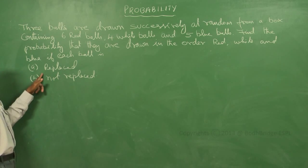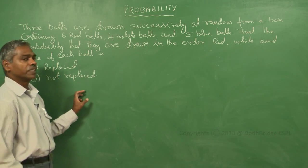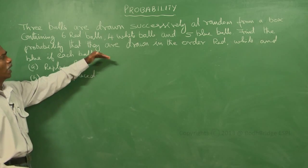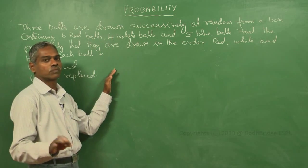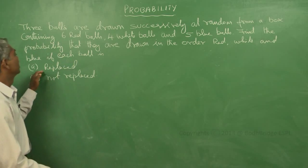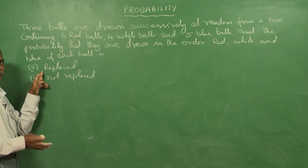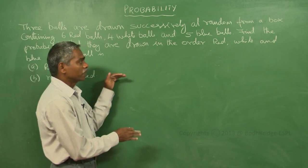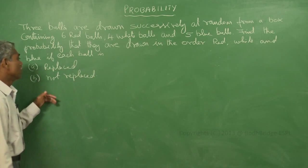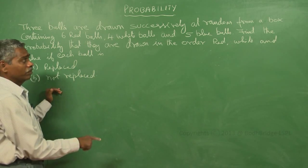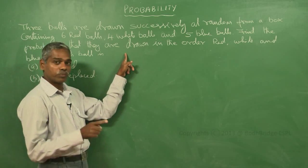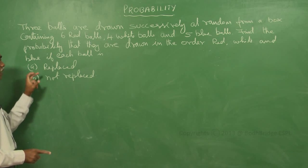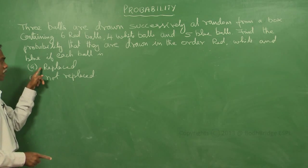The first subdivision: if the ball drawn is replaced. 'Replaced' means the total and the balls remaining are the same irrespective of the drawing — the total is always the same. 'Not replaced' means every time the total is reduced by 1 and the corresponding colour is also reduced by 1. This is the main difference between the 2 cases — replaced and not replaced.